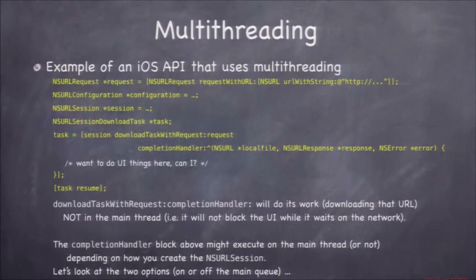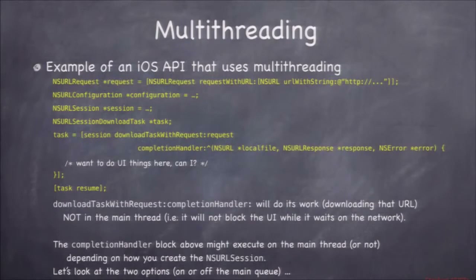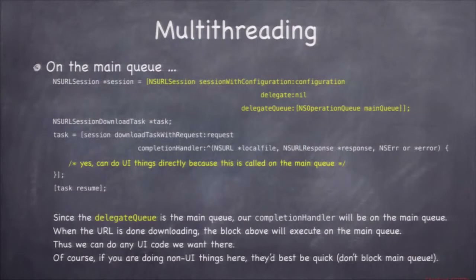Inside the completion handler block, if you want to do UI things, you need to know which queue this block is executing on. If it's on the main queue, you're good. If it's on any other queue, you're not — you'll have to dispatch back to the main queue. Let's look at creating the session using sessionWithConfiguration:delegate:delegateQueue:, where you pass some queue. The NSURLSession has a delegate — the delegateQueue determines where the completion block runs.